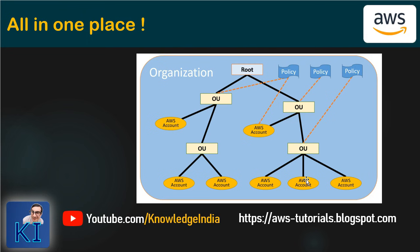The beauty is you can apply SCPs at any level in the hierarchy. If you want to apply a policy to all accounts, apply it at the root level and it flows down to every account. You can also target a specific OU or a specific account. At every level you can specify which SCP to apply. I will show in a separate demo how SCPs come together — writing them from scratch, showing whitelisting, blacklisting, and controlling actions across multiple accounts.